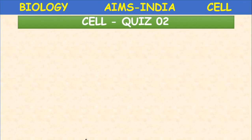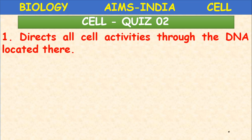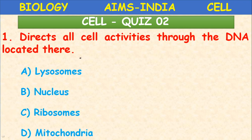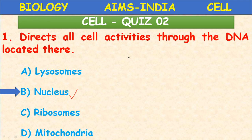Let us test ourselves with quiz number two. First question: which organelle directs all cell activities through the DNA located there? The answer is the nucleus. The nucleus is the cell organelle which directs all cell activities because it contains the DNA. That is why the nucleus is also called the cell brain.